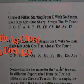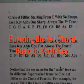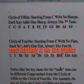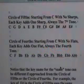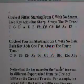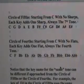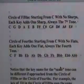So you can see the circle of fifths starting from C with no sharps — each key adds one sharp, always the seventh tone. You'll run through C, G, D, A, E, B, F sharp, C sharp, G sharp, D sharp, A sharp, and E sharp.